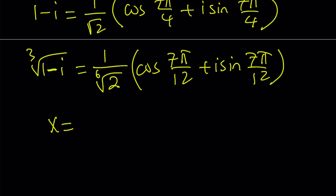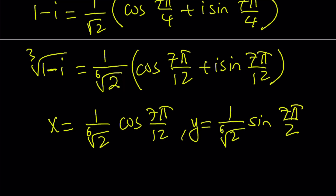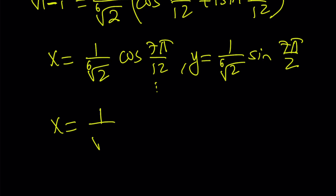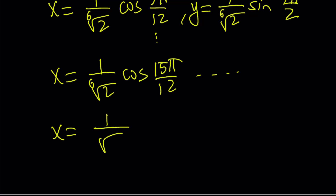So x equals (1 over sixth root of 2) times cosine 7 pi over 12, and y equals (1 over sixth root of 2) times sine 7 pi over 12. The other solutions are obtained by adding 2 pi over 3 to the argument: giving 7 pi over 12 plus 2 pi over 3 equals 15 pi over 12, and then 15 pi over 12 plus 2 pi over 3 equals 23 pi over 12.